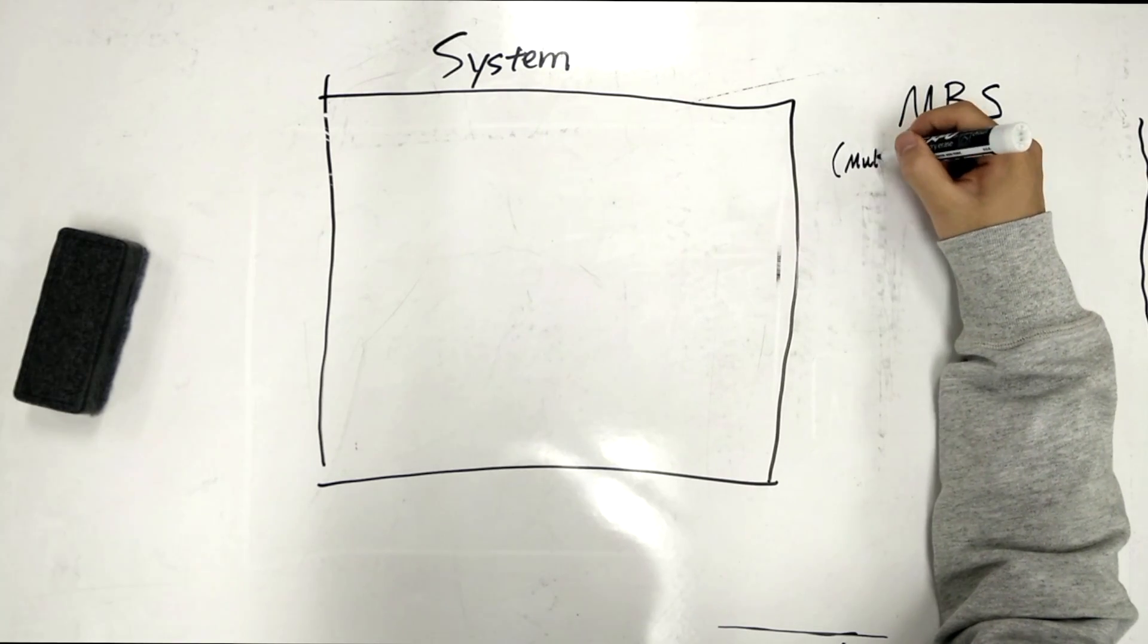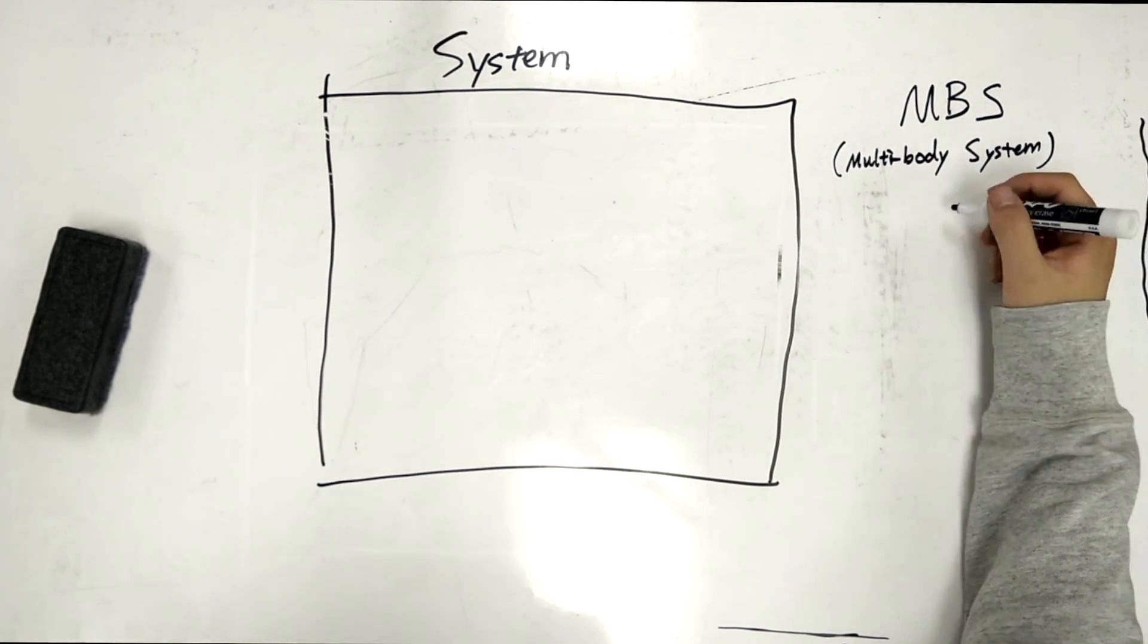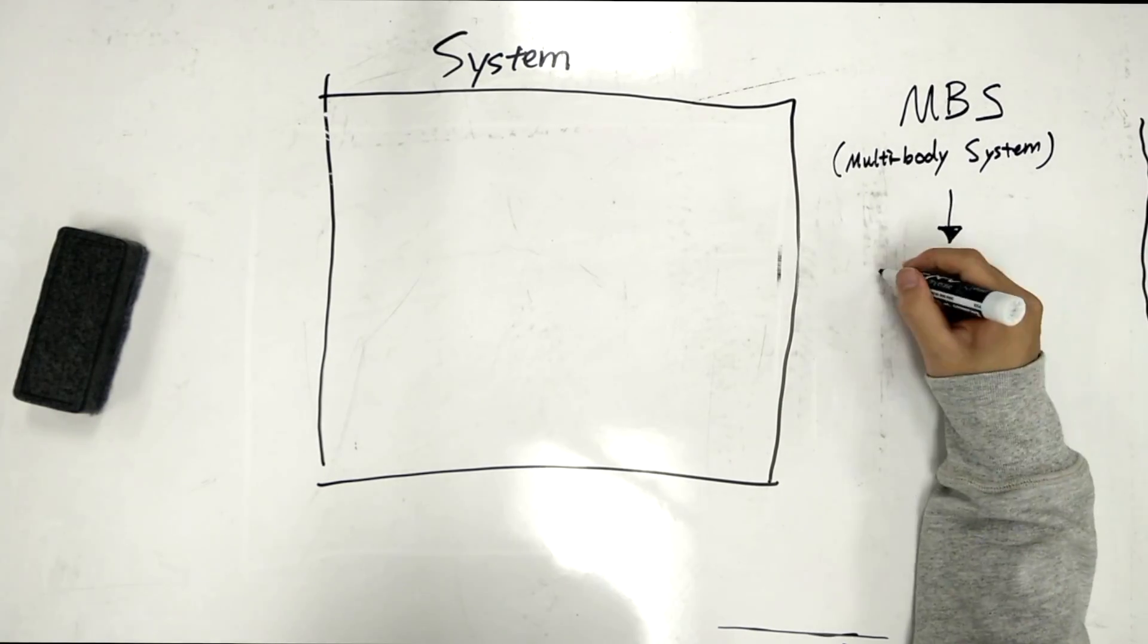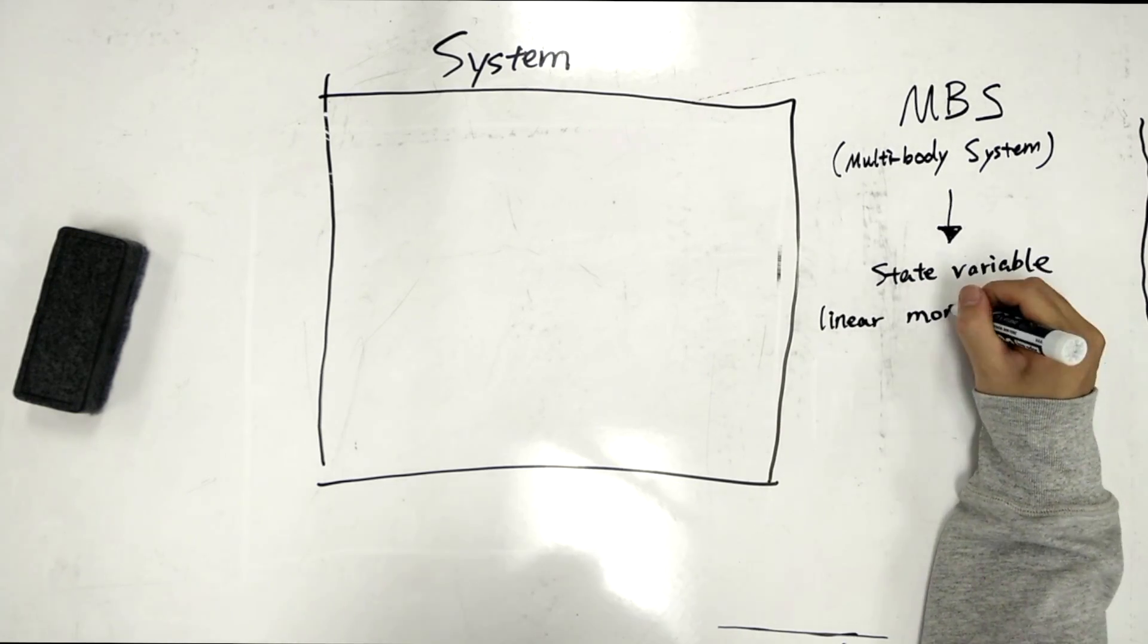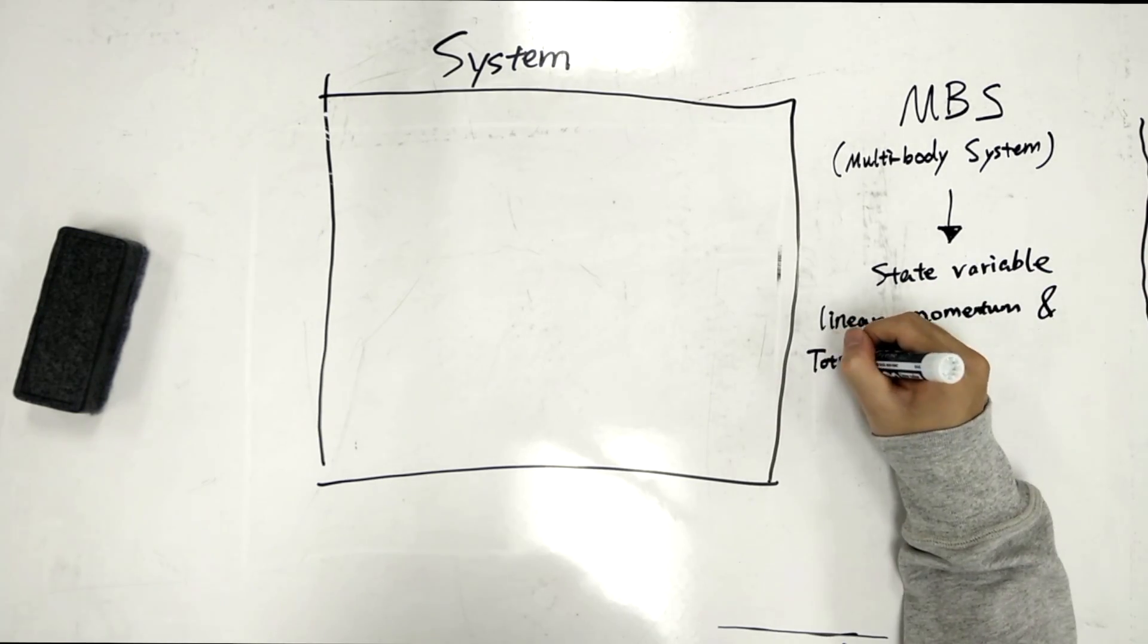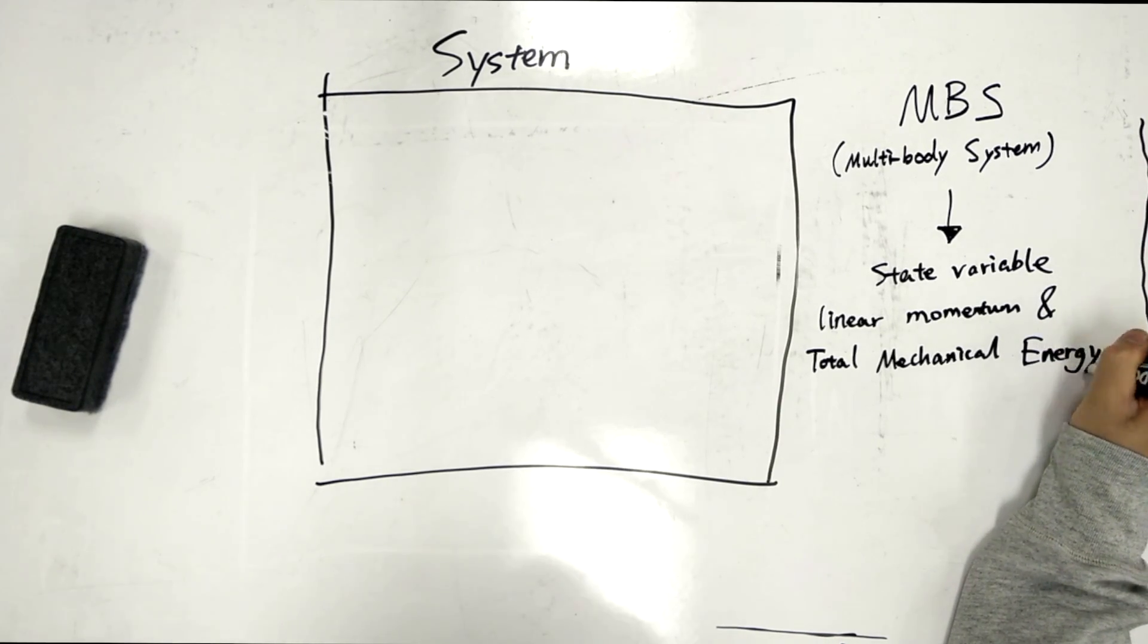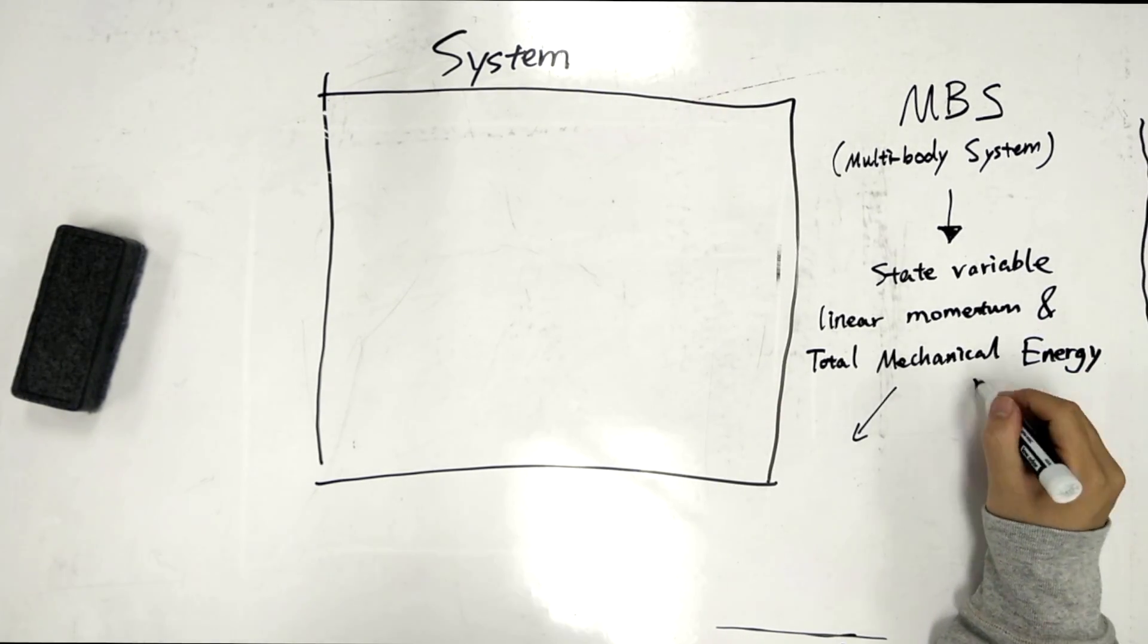The second one is a multi-bodied system. A multi-body system, its key difference from a single-body system is that it includes multiple bodies, or objects inside of it, and they translate energy between one another. State variables are linear momentum and total mechanical energy. And the agents of change are impulse and work.